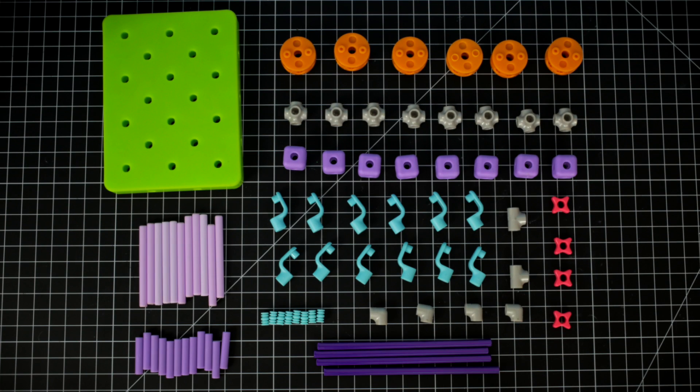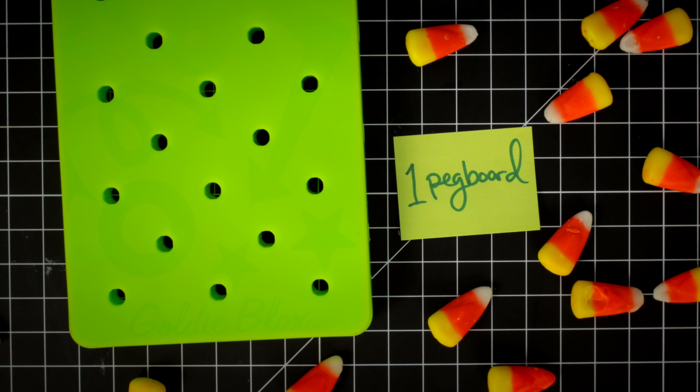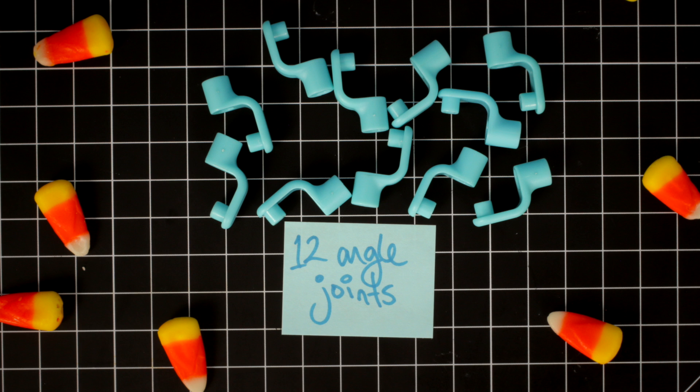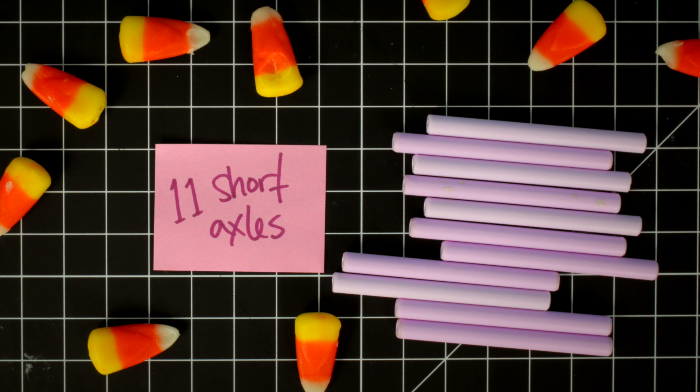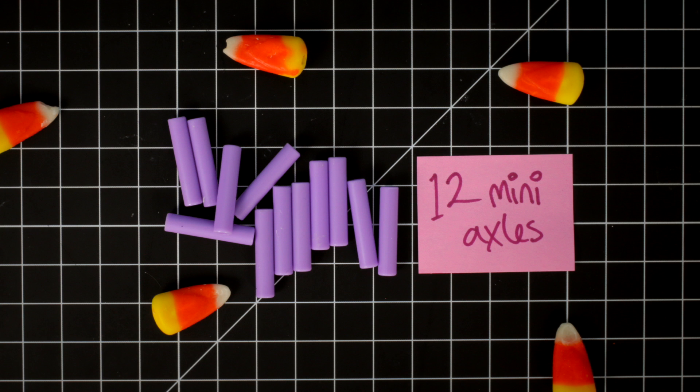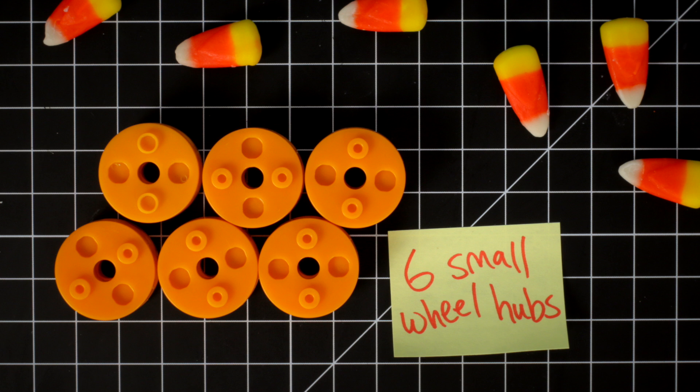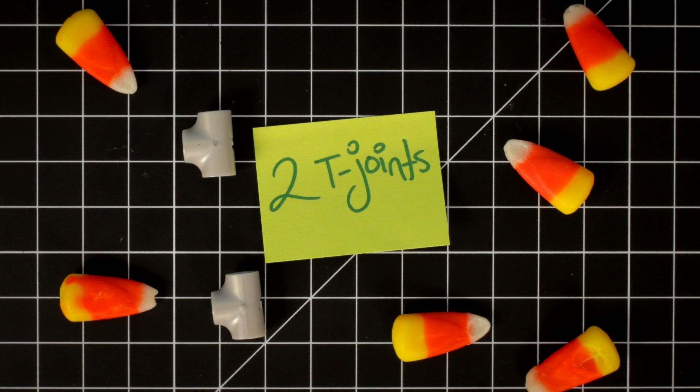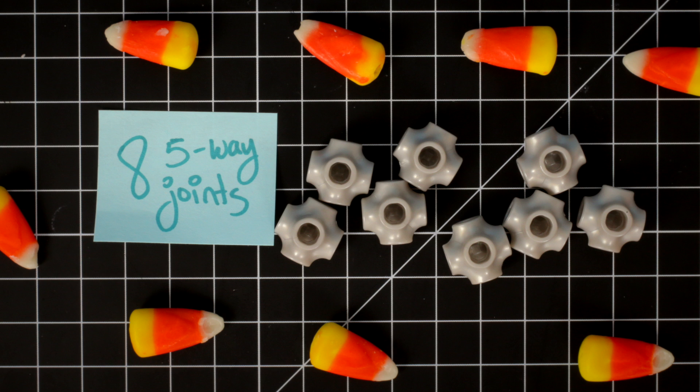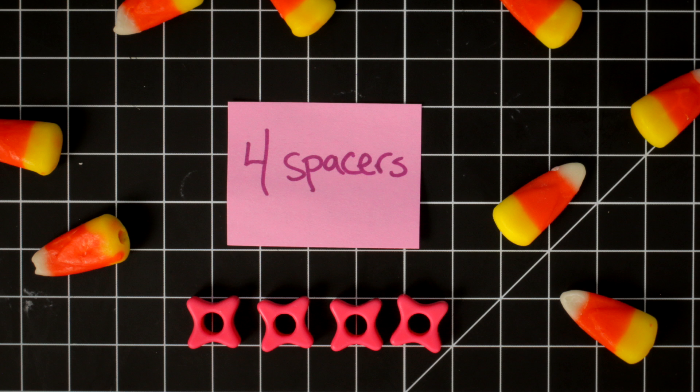Make sure you have everything! One pegboard, twelve angle joints, four long axles, eleven short axles, twelve mini axles, eight blocks, eight pegs, six small wheel hubs, two T-joints, eight five-way joints, four elbow joints, and four spacers.